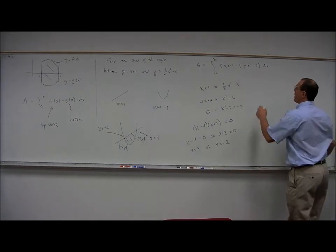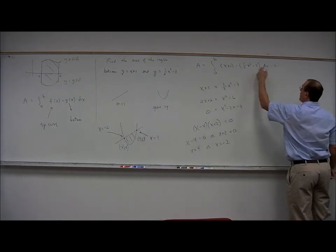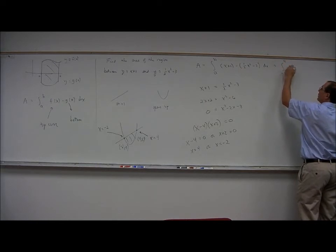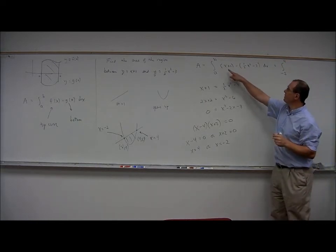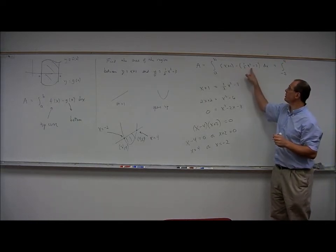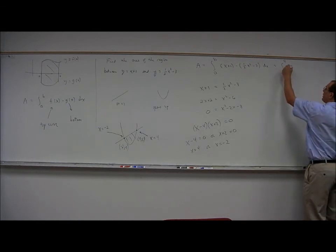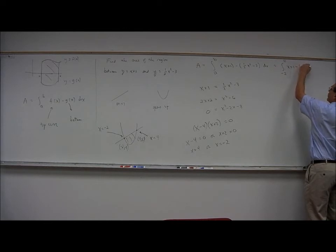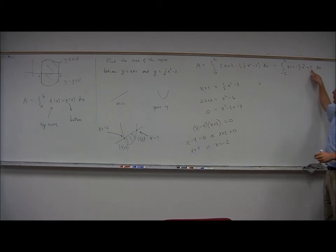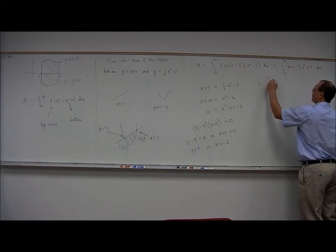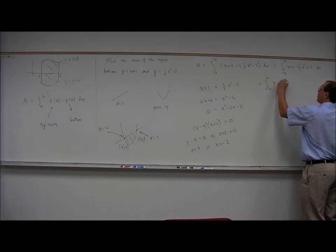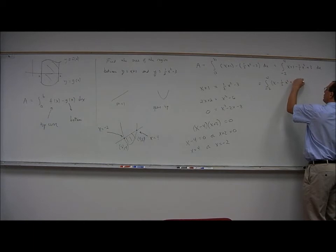So continuing with our area then, our a and b are negative 2 and 4. We can simplify this by subtracting. This is going to become x plus 1 minus 1 half x squared plus 3. And then combining the 1 and the 3 to get 4, we have integral negative 2 to 4 of x minus 1 half x squared plus 4 dx.